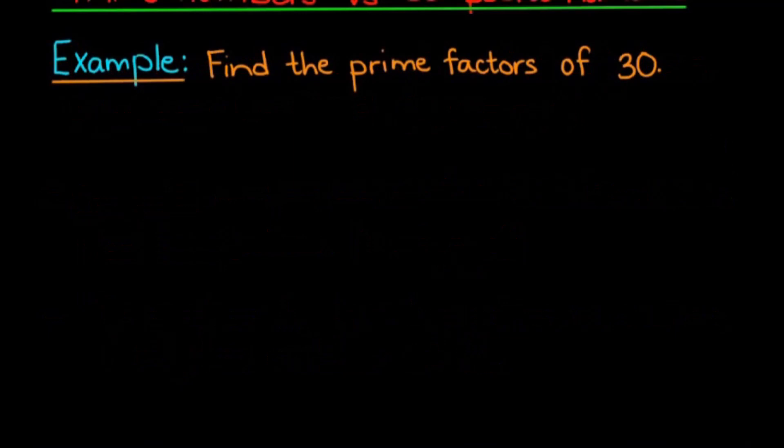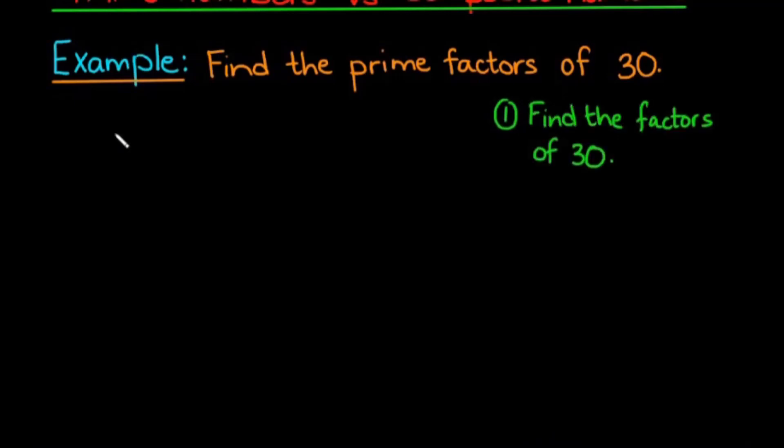In our example, we will be finding the prime factors of 30. When you get a question like this, there are a few steps that you need to remember. First thing that you have to do is find the factors of 30. So if I start with that, I have 1 times 30, 2 times 15, 3 times 10, and 5 times 6.